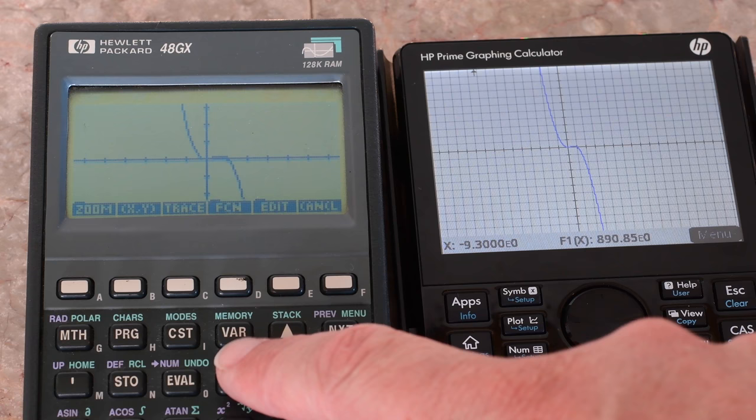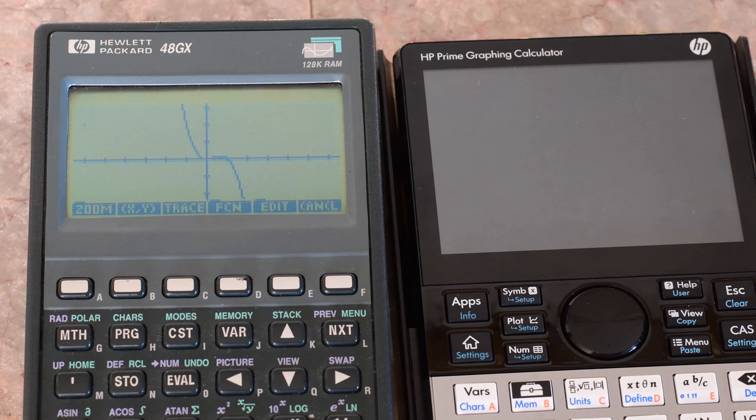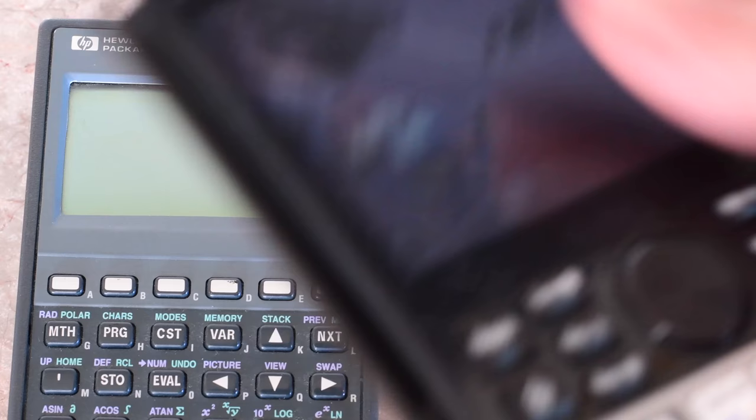The HP 48 had something similar where you could trace along with the arrows. But the touching is much nicer. So there you can see truly fantastical speed difference in the Prime.